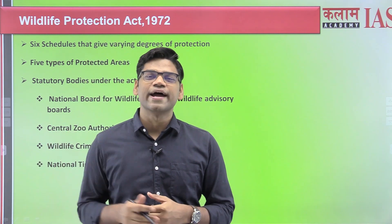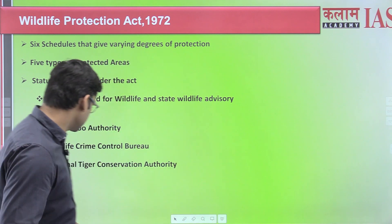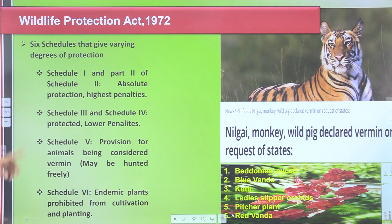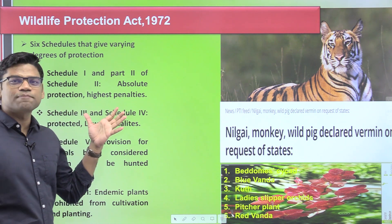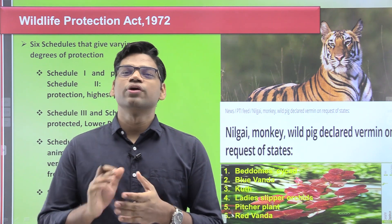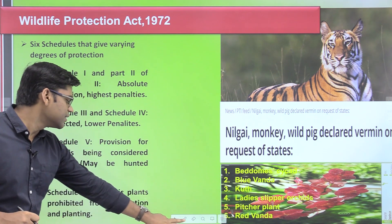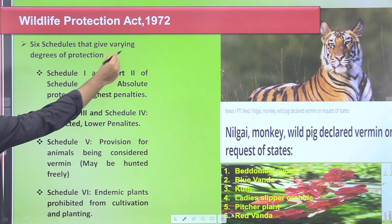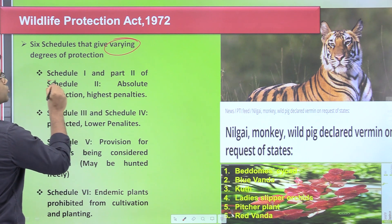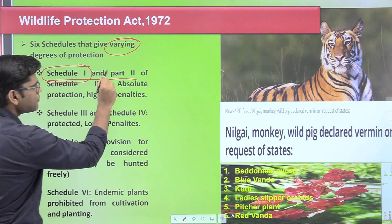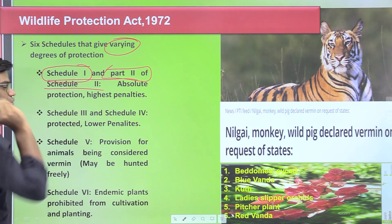This particular act deals with all those things. So let's start with the six schedules. This particular act provides six schedules. These six schedules cover different wildlife species to give them protection. However, an important thing to know is that this protection varies — in particular, Schedule 1 and Part 2 of Schedule 2 give absolute protection.